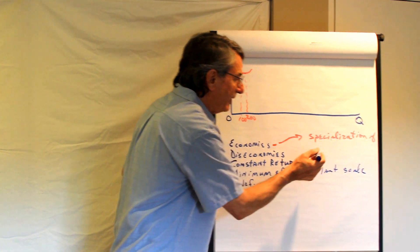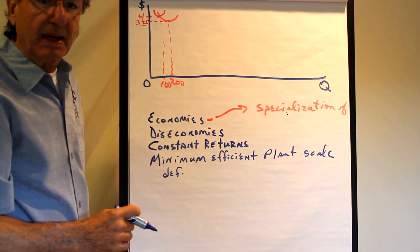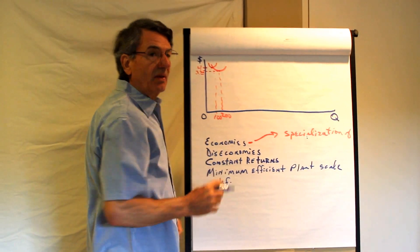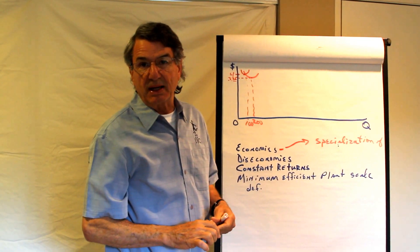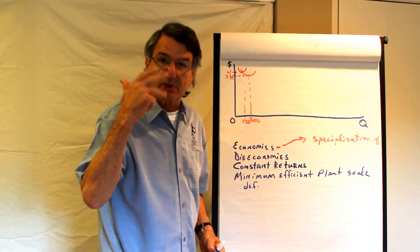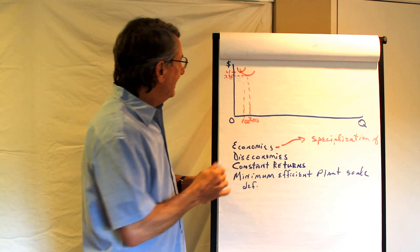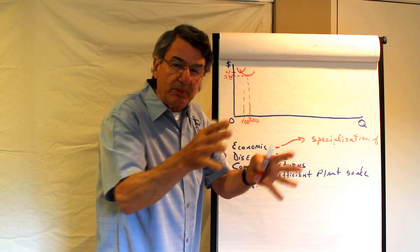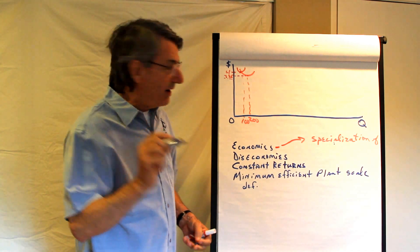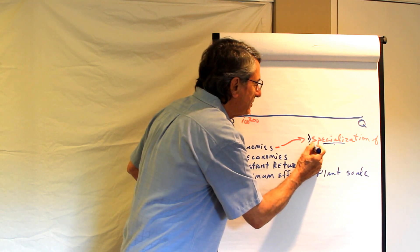So there's specialization of capital and specialization of labor as well. As you get bigger you can get specialized workers. With a little bakery there's one person, two people running it. The baker, the sales person, the marketing person, the business person, the accountant. It's all the same person. But if you get bigger you can get people to do each of these jobs and specialize in them and they're better off. So that's the first reason why economies of scale exist because of specialization.